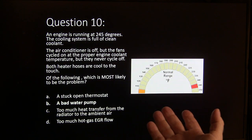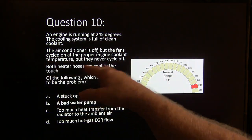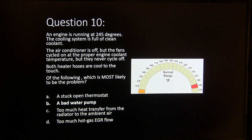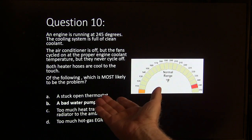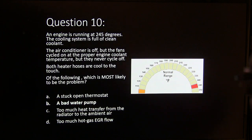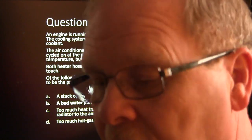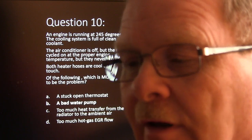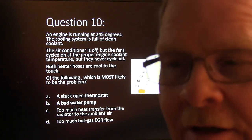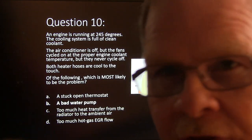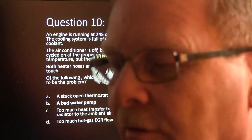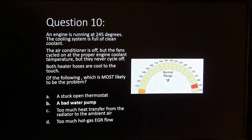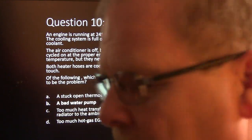The engine's running at 243 degrees with the cooling system full of clean coolant. The air conditioner is off, but the fans cycled on at the proper temperature and never cycle off. Both heater hoses are cool to the touch. A bad water pump is the answer. If those heater hoses are cool to the touch and you know it's full of good coolant, you can pull the heater hoses loose, run a clear hose from hose to hose, and see if coolant is flowing through. If it's not, chances are you've got a bad water pump with a rusted-away impeller.